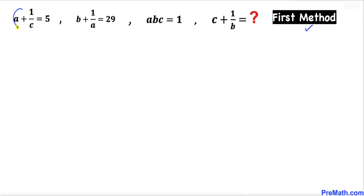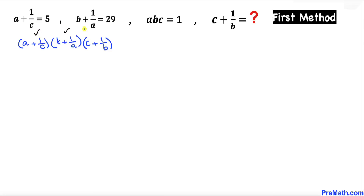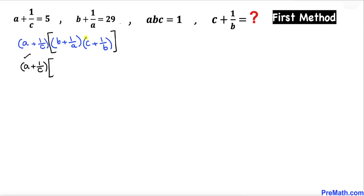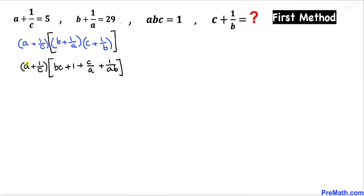Let's focus on the left-hand side parts of these equations. We are going to multiply out these left-hand sides. I have copied down all three left-hand sides, and now I'm going to put brackets around this part and do the double distribution. Inside this bracket, b times c gives c, and b times 1 over b is simply 1.